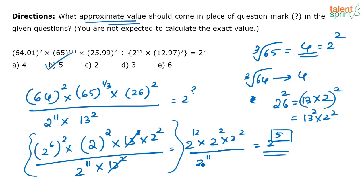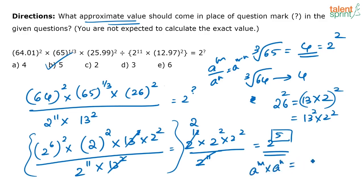For reference: a to the power m divided by a to the power n equals a to the power m minus n. So 2 to the power 12 minus 11 gives 2. Similarly, a to the power m times a to the power n equals a to the power m plus n. So 2 squared times 2 squared equals 2 to the power 4, and 2 to the power 4 times 2 equals 2 to the power 5. The answer is option B, which is 5.